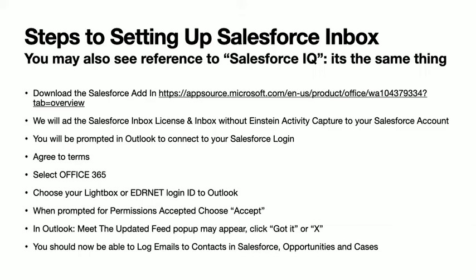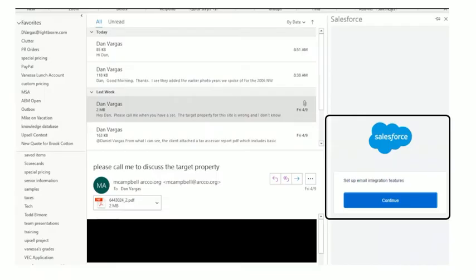If you have an email open, on the right sidebar you would see basically any related contacts, opportunities, or cases.